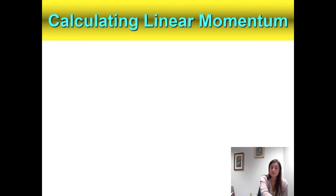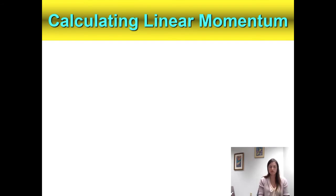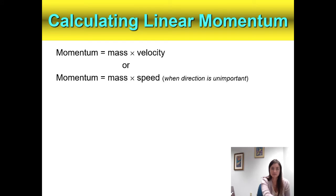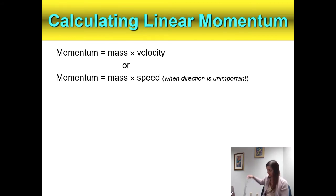Momentum equals mass times velocity. Increasing the mass would increase the momentum, but also increasing the velocity could increase the momentum. So maybe the truck wouldn't always have more momentum than the skate if it's going very slowly — what if the truck were stopped? This is an example of linear momentum: moving in a line. We're not going to introduce any curves right now. If we're not worried about direction, we could say mass times speed, but velocity does matter.